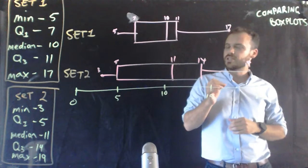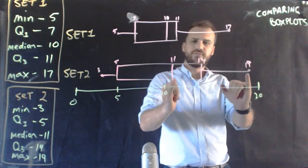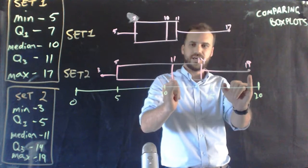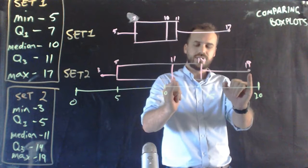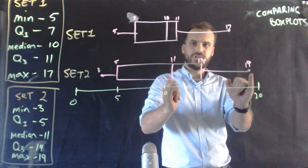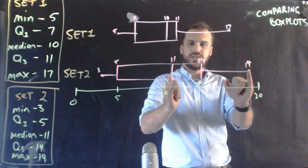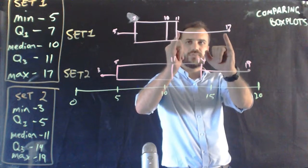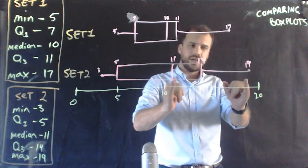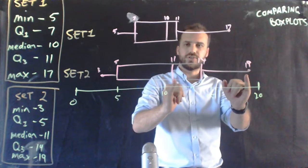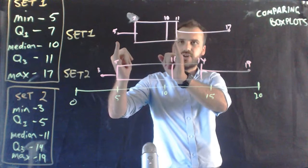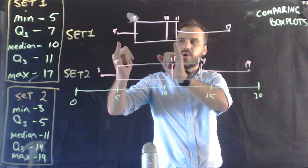We can also say things like 50% of students in set two, if you can see that, from the median to the max, that's 50% of students. 50% of students here performed as well as 25% of students here. Or, to put it another way, 50% of students from class two performed better than the bottom 75% of students from set one.